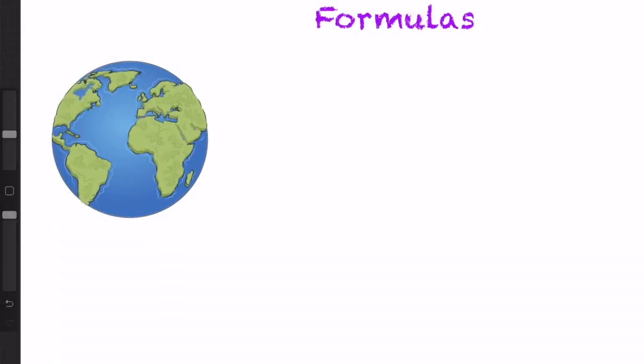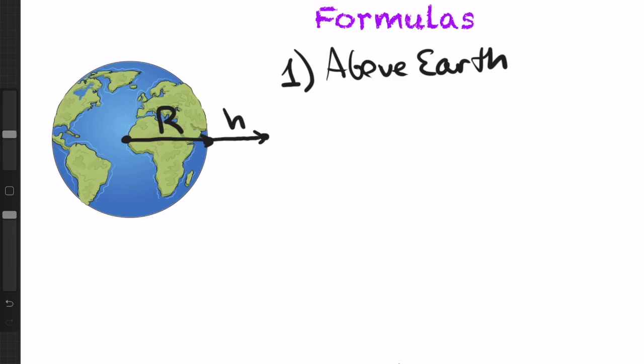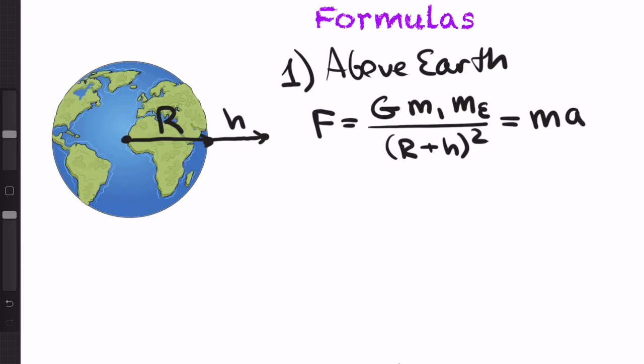So let us recall formulas. First, we do it for going above Earth, and this will come from a familiar Newtonian law of gravitational attraction. So we know that if we are at height h, and we have radius r here, you should know that the force is G times m1 times mass of Earth over r plus h squared. But f is ma due to second law of Newton, where a is this acceleration at this point.